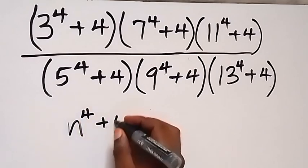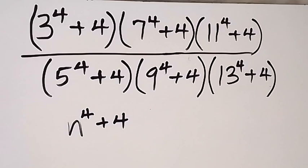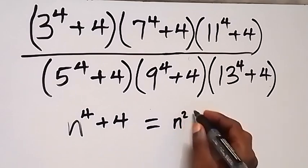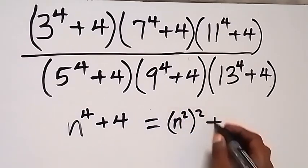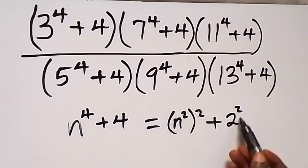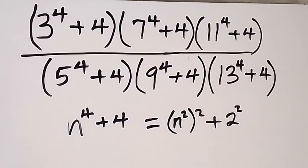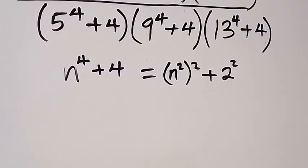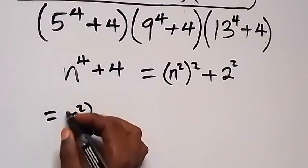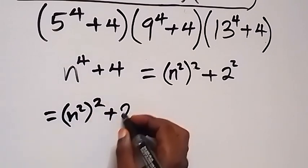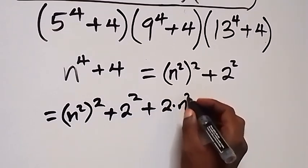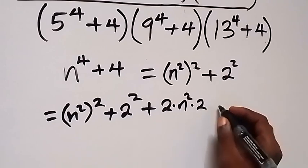We can write n⁴ + 4 as n² squared plus 2 squared. Note that 2 times 2 is 4 and 2 raised to power 2 is also 4. From here, let's add and subtract a particular number so that this becomes n² squared plus 2 squared plus 2 times n² times 2.